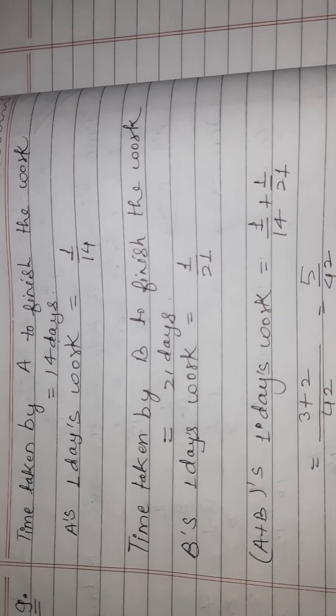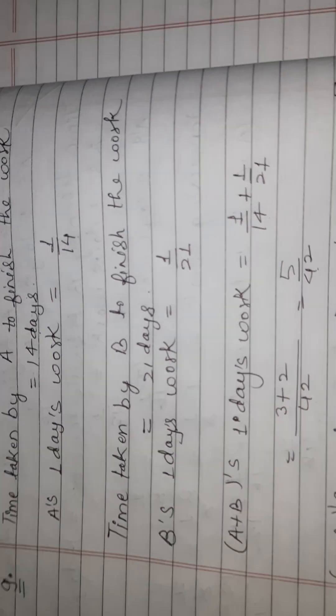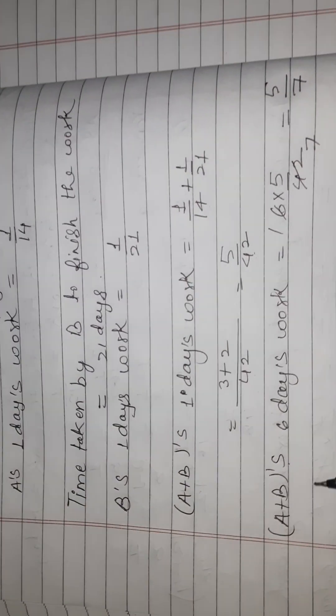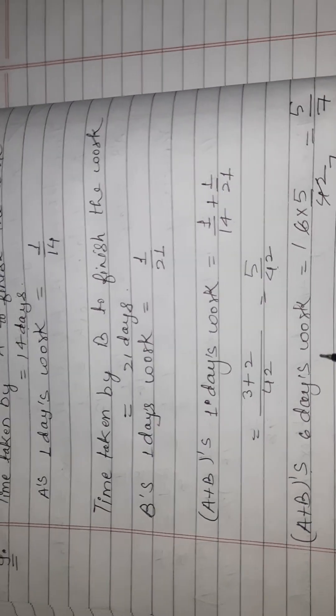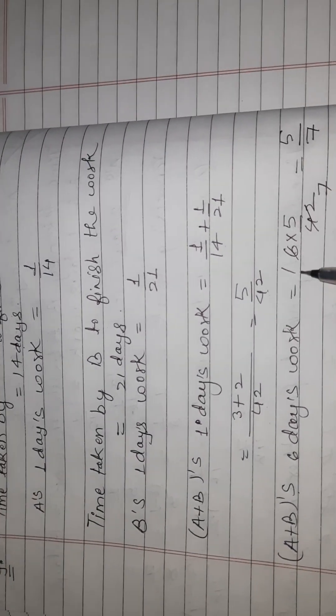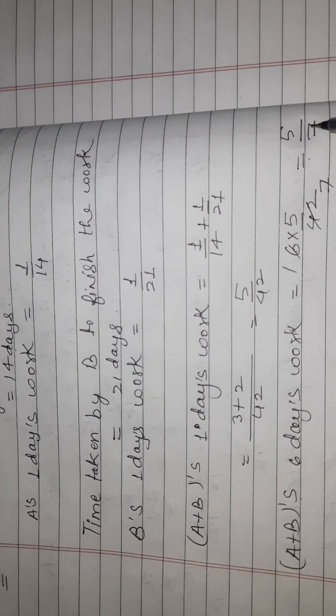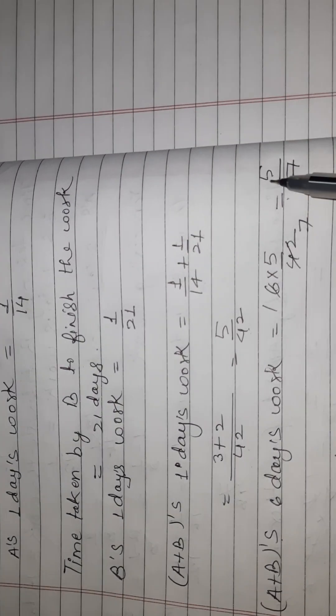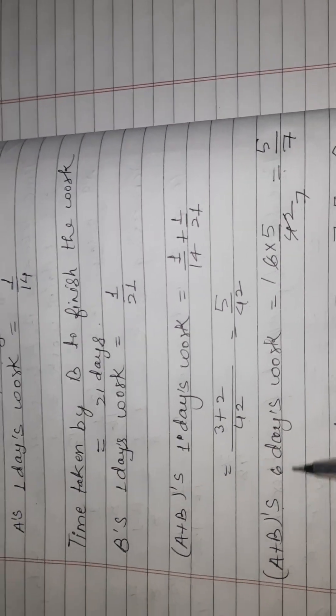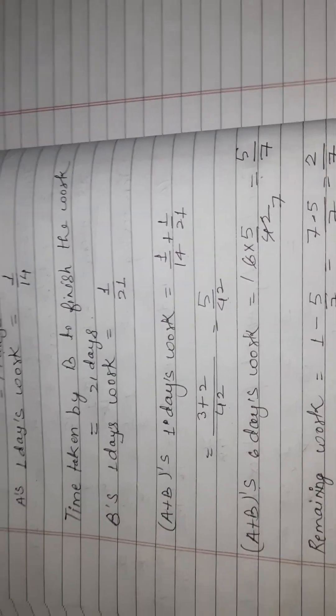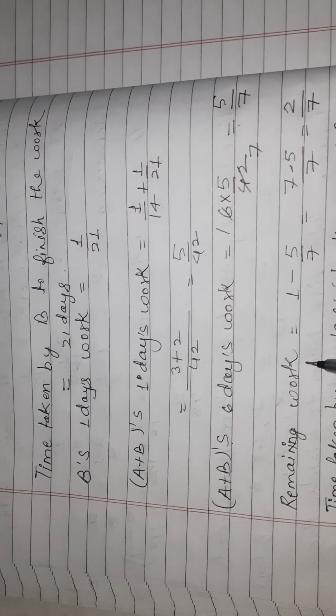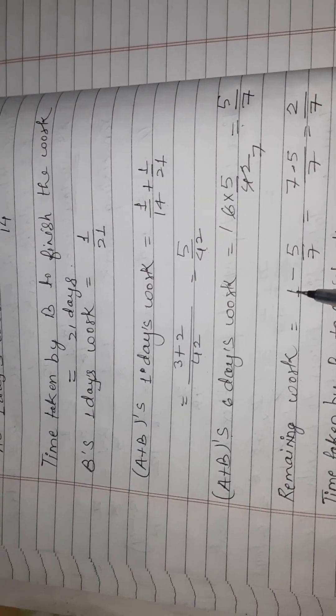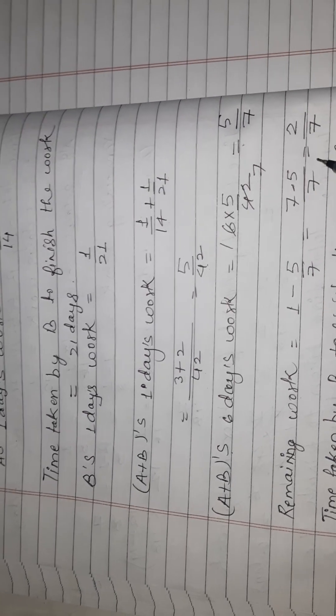Means A and B together in 1 day will do 5 upon 42, and A and B in 6 days will do 6 times 5 upon 42, which is equal to 5 upon 7. Then remaining work will be 1 minus 5 upon 7, which equals 2 upon 7.